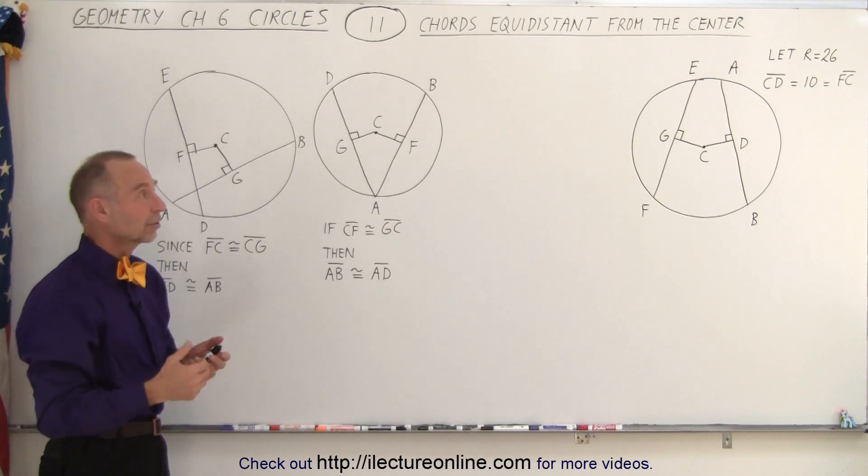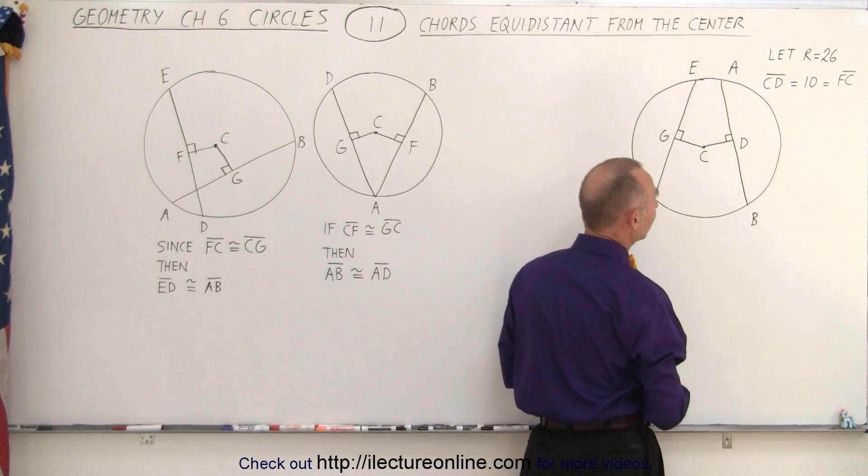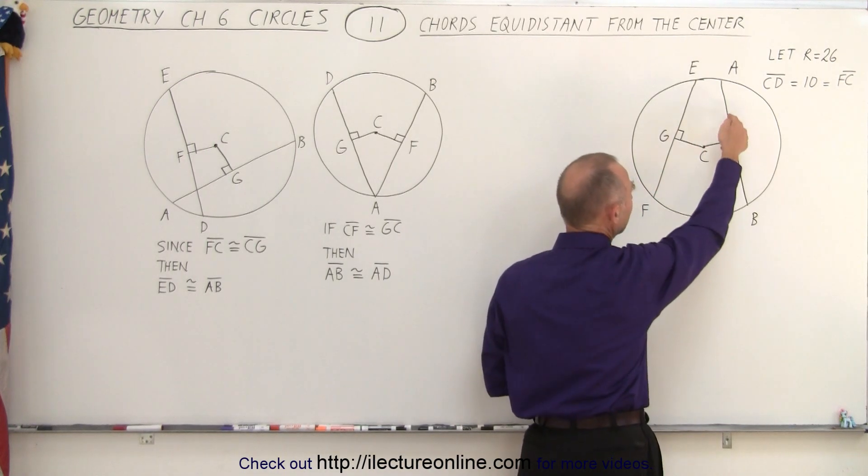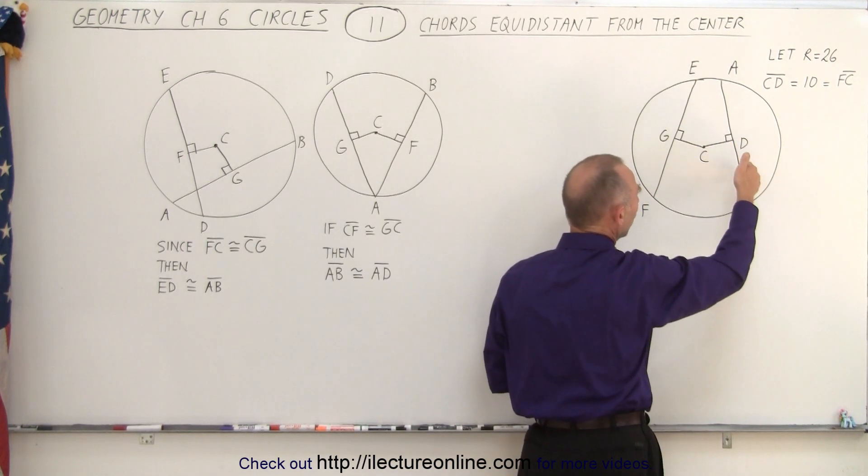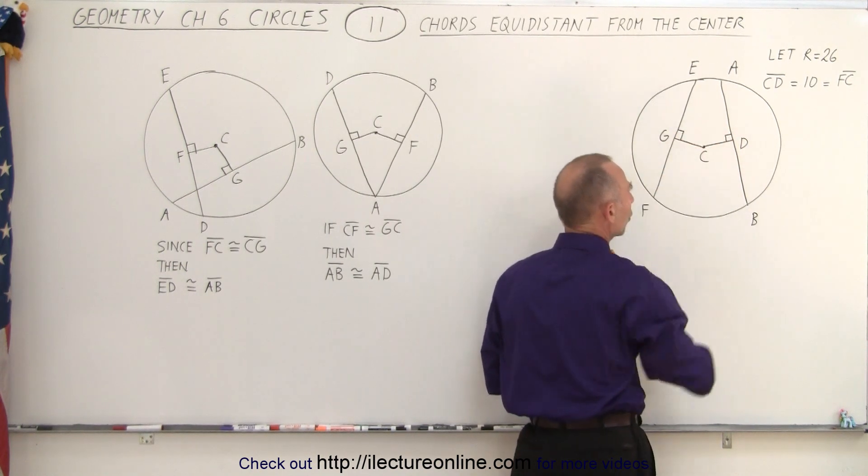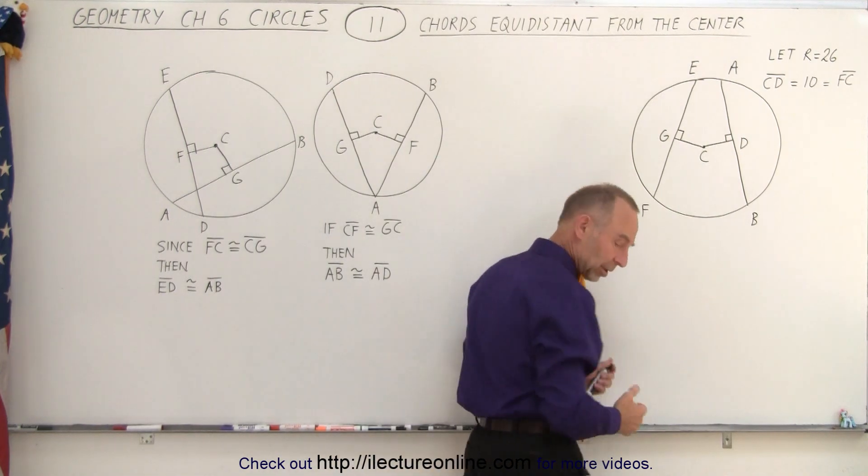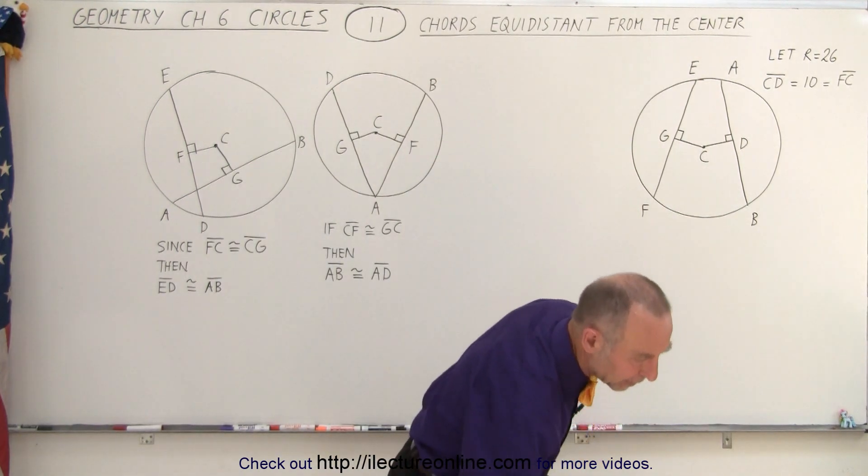Now let's show you numerically where that's coming from. So let's say we have a circle whose radius is 26 and notice that the distance from the chord to the center is equal to 10 and that is true for both chords. Well, what we can do here is we can draw, let me use a different color, maybe that's a little easier to see.